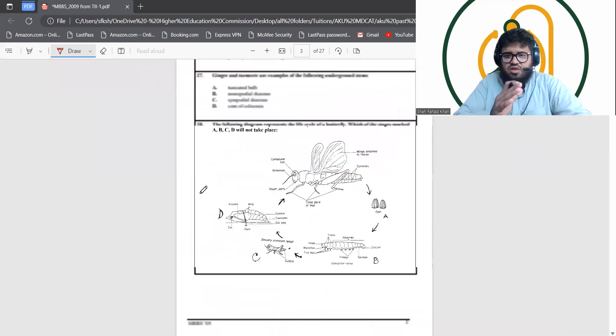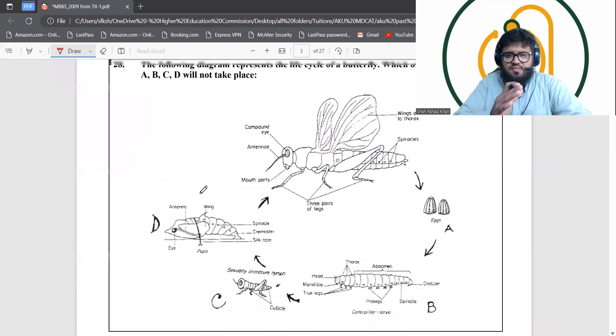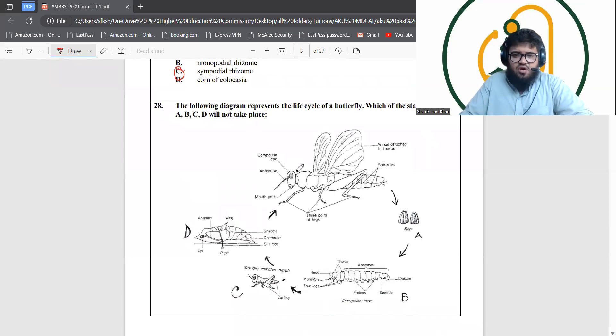This is a cycle from the metamorphosis of a butterfly. All of these are correct actually, except for this one. This resembles a grasshopper and grasshopper has nothing to do with a butterfly.